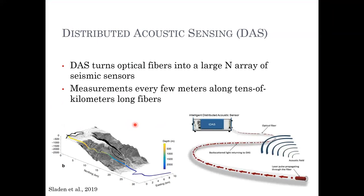Distributed acoustic sensing, or DAS, allows us to turn optical fibers — basically any optical fiber deployed either for telecommunications or seismology — into large N-arrays of seismic sensors. It allows us to obtain measurements every few meters along tens of kilometers of fiber. This is an example of one fiber used offshore Toulon, where the interrogator is placed at one end and the fiber goes to the ocean bottom to a depth of two and a half kilometers.